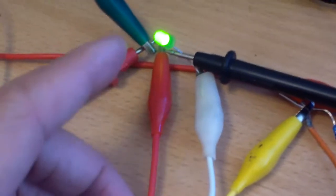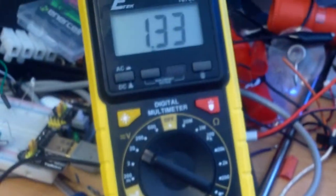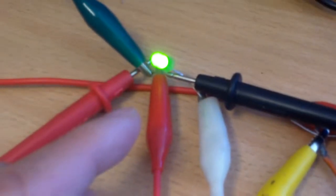I hooked up the green LED back and I see the voltage is 1.33 across the negative and the positive.